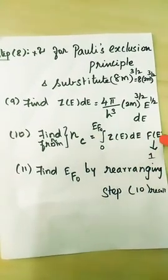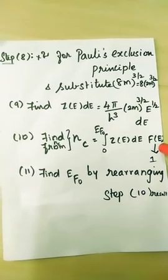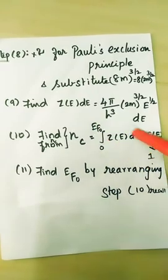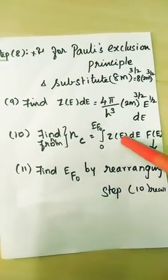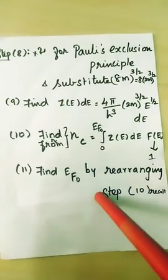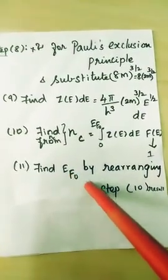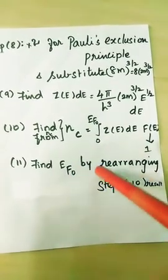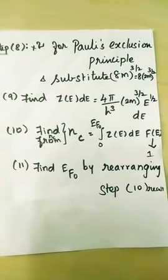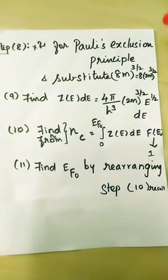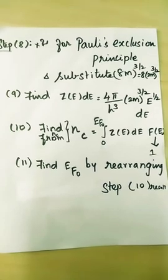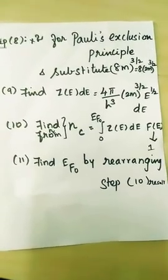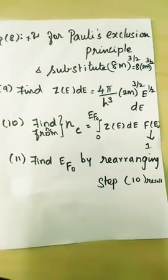Integrate from 0 to Ef0: Z(E)dE × f(E), where f(E) equals 1. From this, carrier concentration can be determined.